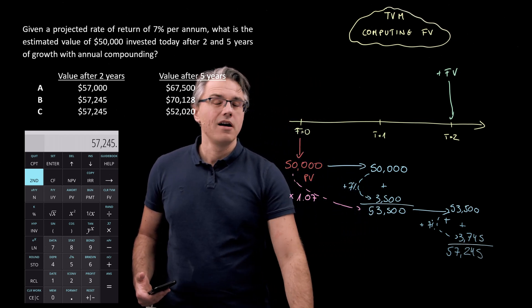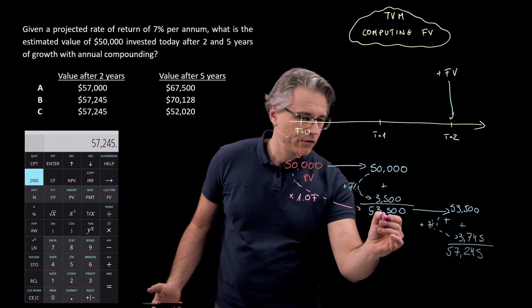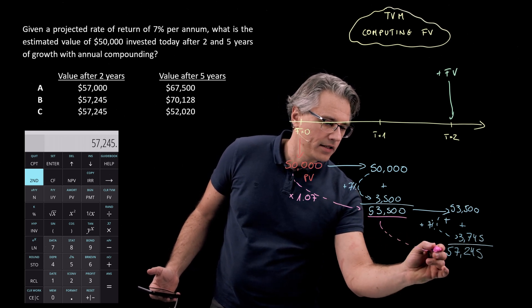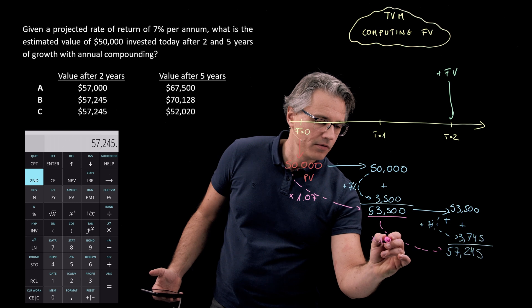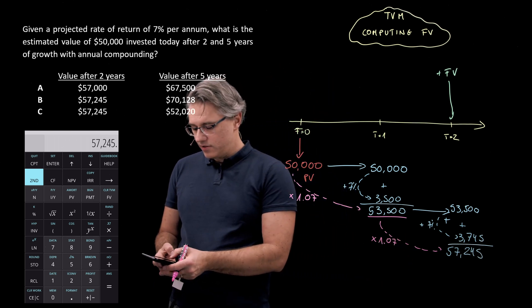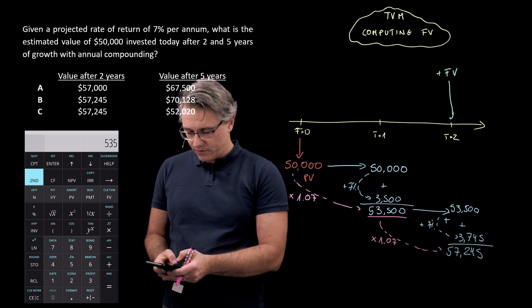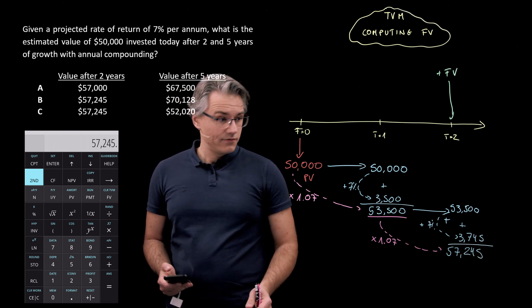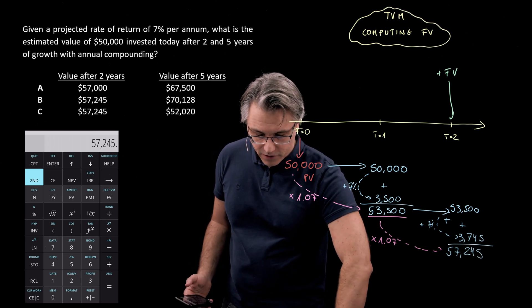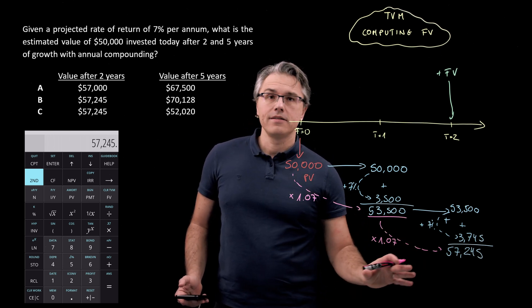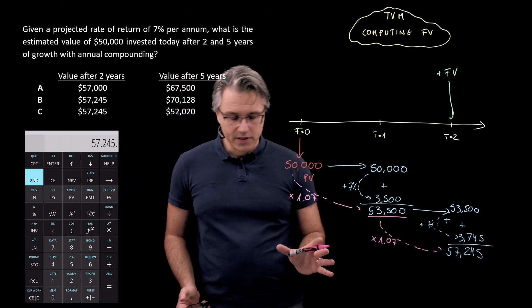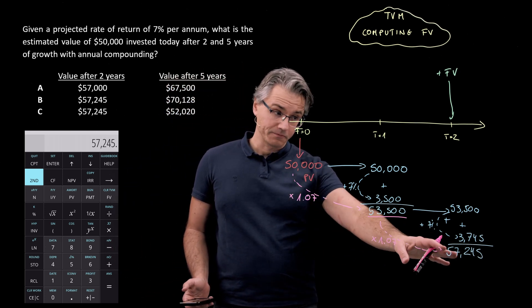And once again, the same logic as before applies. I could have gotten to the same number by taking the result from over here and multiplying that by a factor of 1.07. Let's just see if that's true. 53,500 times 1.07. Yeah, that gives 57,245. And essentially, that is the answer to at least part of the question, what's going to be the future value of the investment at the end of year two? This much.